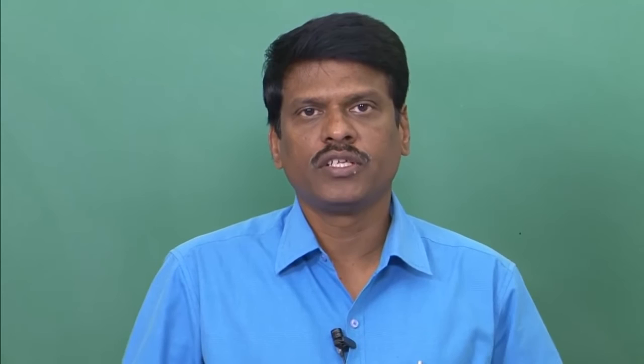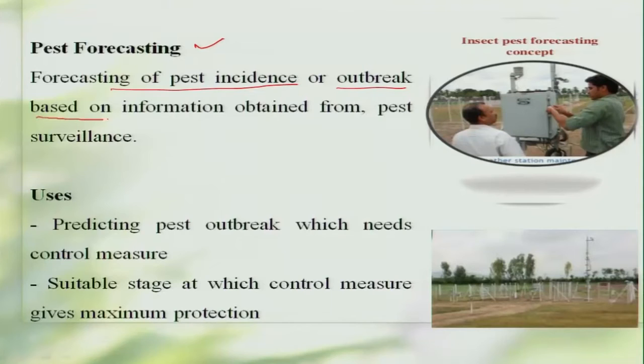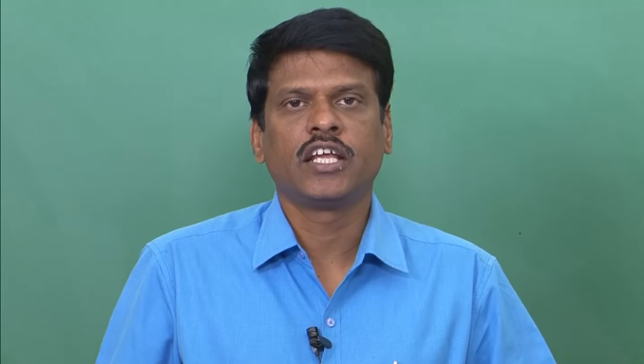One great advantage of monitoring, survey, and surveillance is pest forecasting. Pest forecasting is the forecasting of the incidence or outbreak of the pest based on information obtained from pest surveillance. Through accumulation of pest surveillance data and integrating it with abiotic and biotic factors, we develop forecasting models based on which we can predict the occurrence of these pests — either in the short term or long term — so that we are ready to contain the pest well in advance.